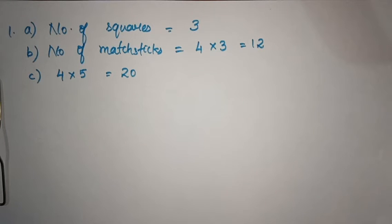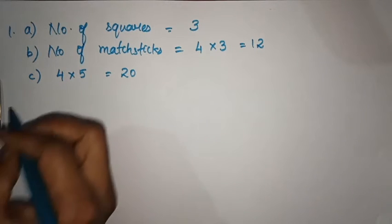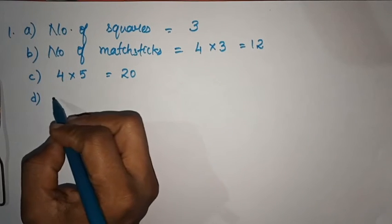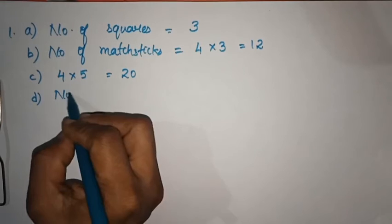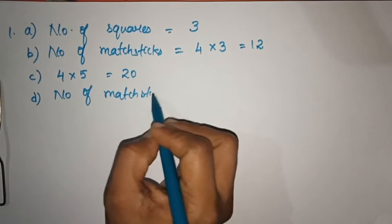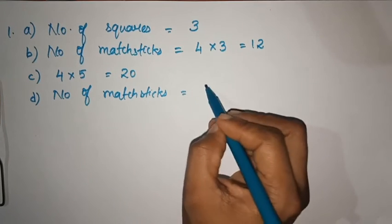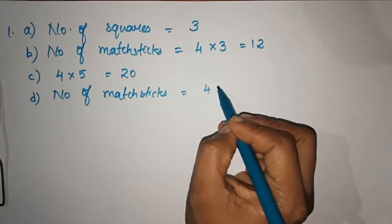We can find the number of squares. Number of squares and number of matchsticks — with two national squares, what are the numbers? We can find the number of matchsticks. What is the number of matchsticks? This is the number of squares: 4 × 3.